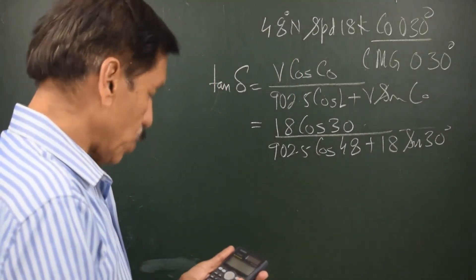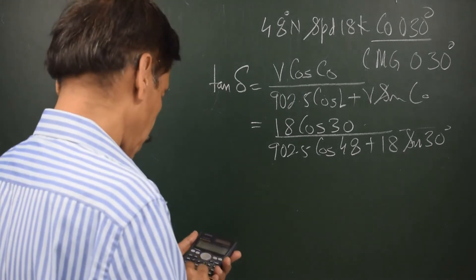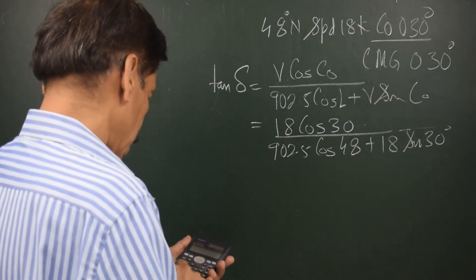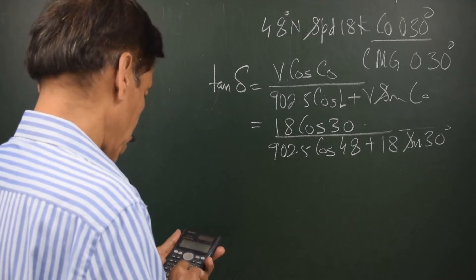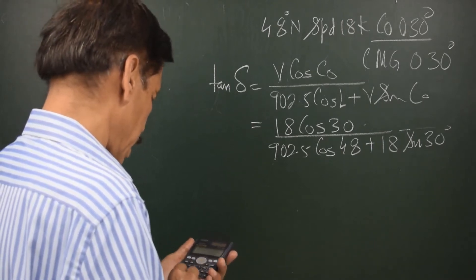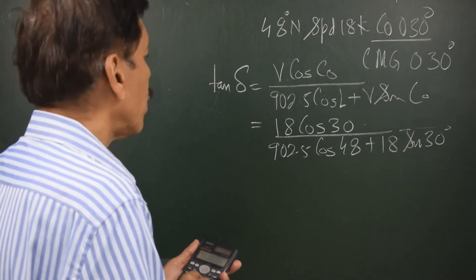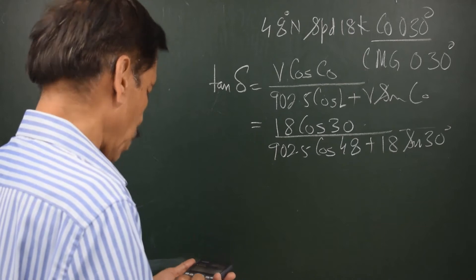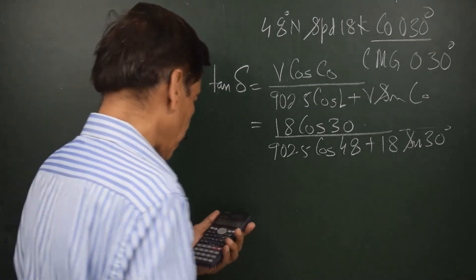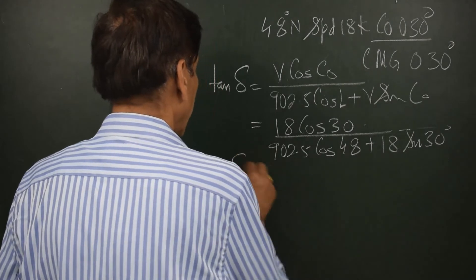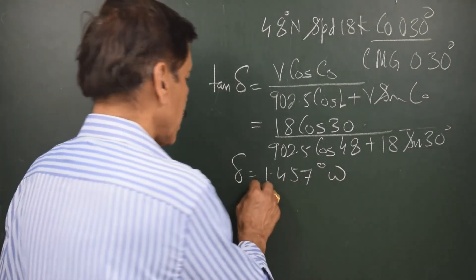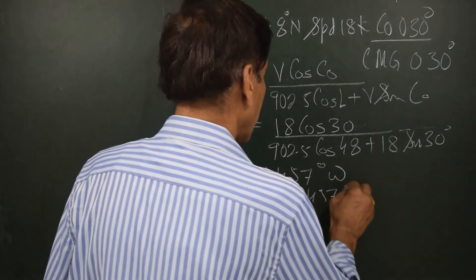Putting the values: 18 cos(30) divided by the bracket 902.5 cos(48) plus 18 sin(30) degrees, then shift tan. You get 1.456 or 1.457. So delta equals 1.457 degrees westerly. This means the damping error is also 1.457 degrees westerly.